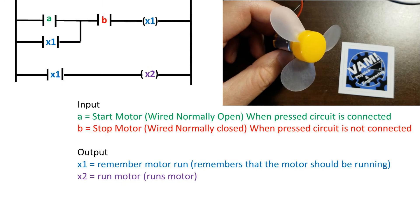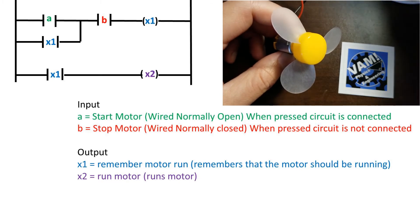So what is a seal circuit? It is a circuit that remembers that the start button was pushed. We add another coil, that is X1, which is a memory bit, to remember that the switch was pressed.